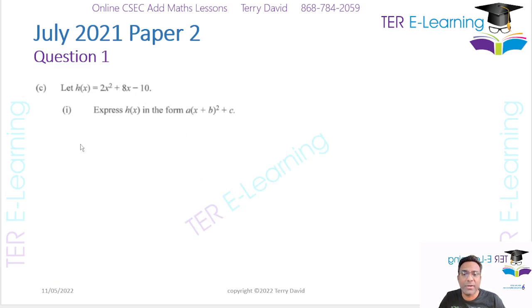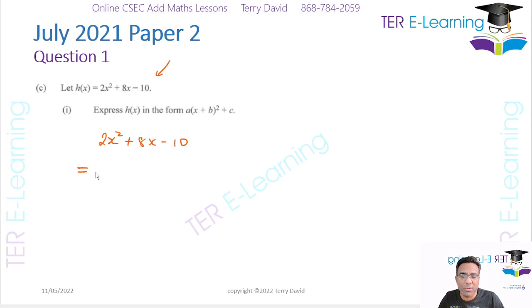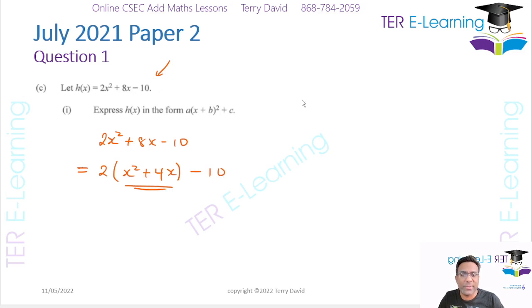The next part wants us to complete the square for 2x squared plus 8x minus 10. I'm going to factor out 2 initially, giving 2 times (x squared plus 4x minus 5). Now focus on x squared plus 4x inside the brackets.